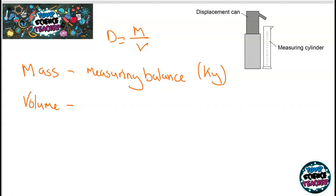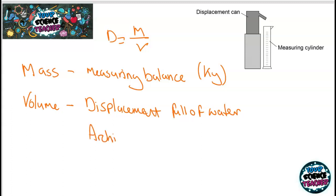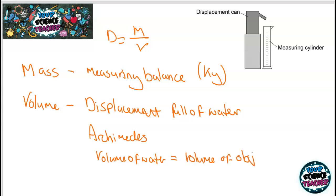If the material is more dense than water, you can use a displacement can. Fill it with water and place a measuring cylinder underneath. This is called Archimedes' principle: when you place your irregular object inside the displacement can, it displaces water, and the volume of that water equals the volume of the object. However, this only works for objects more dense than water — if your object is less dense than water, it will float and will not displace the water.